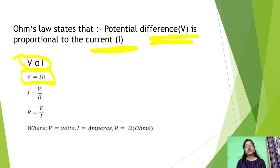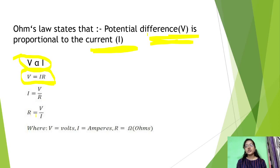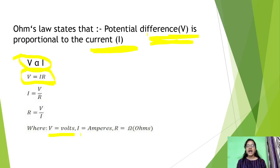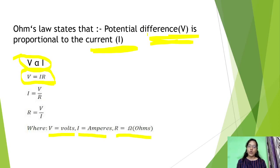We can also represent it as I is equal to V upon R. The potential difference V has the unit volt. I is current and its unit is ampere. R is resistance and the unit of resistance is ohm, which we represent with the symbol omega.